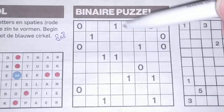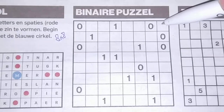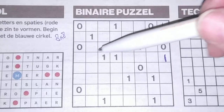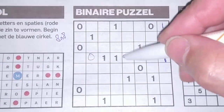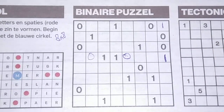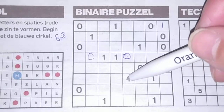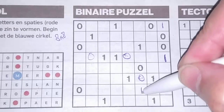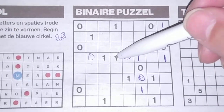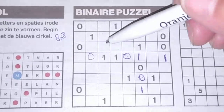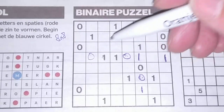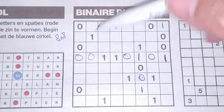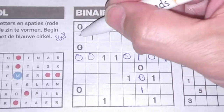We have a double zero here, a one there, and a one here. We have a double one here, an O there, and an O. Between two ones comes an O. We have double O here, a one there, and a one. Look — we have one, two, three, four — four ones in this row. That means the other boxes are Os.